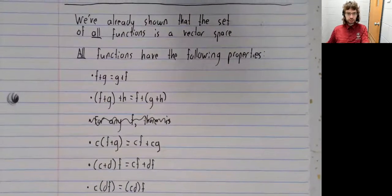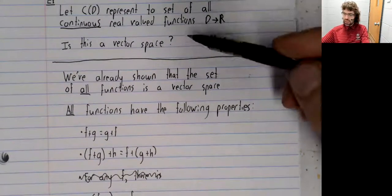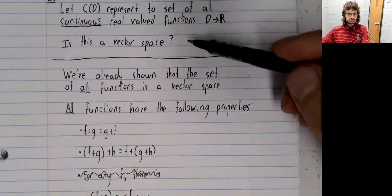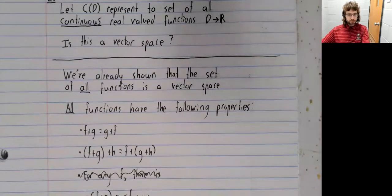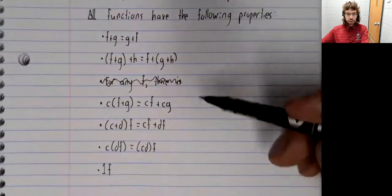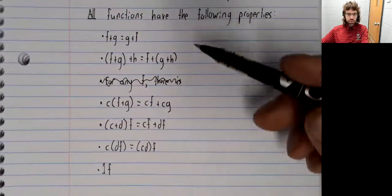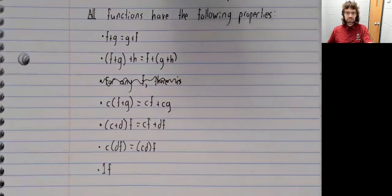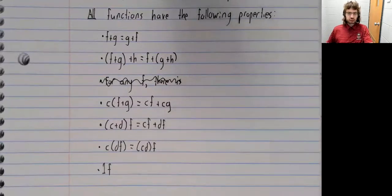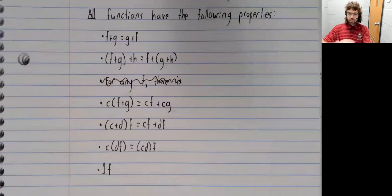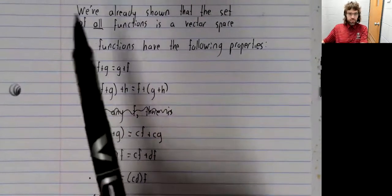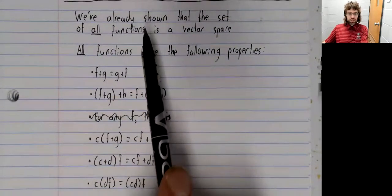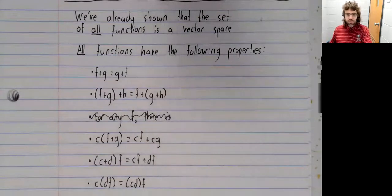So are we done? Have we answered this question? Well, we're not done. Because there are a few properties that aren't on this list. For example, in order to be a vector space, we need a zero function.